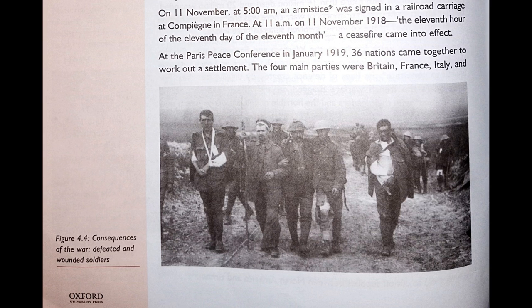On 11 November at 5 a.m., an armistice — a formal agreement of warring parties to stop fighting — was signed in a railroad carriage. At 11 a.m. on 11 November 1918, the 11th hour of the 11th day of the 11th month, a ceasefire came into effect.